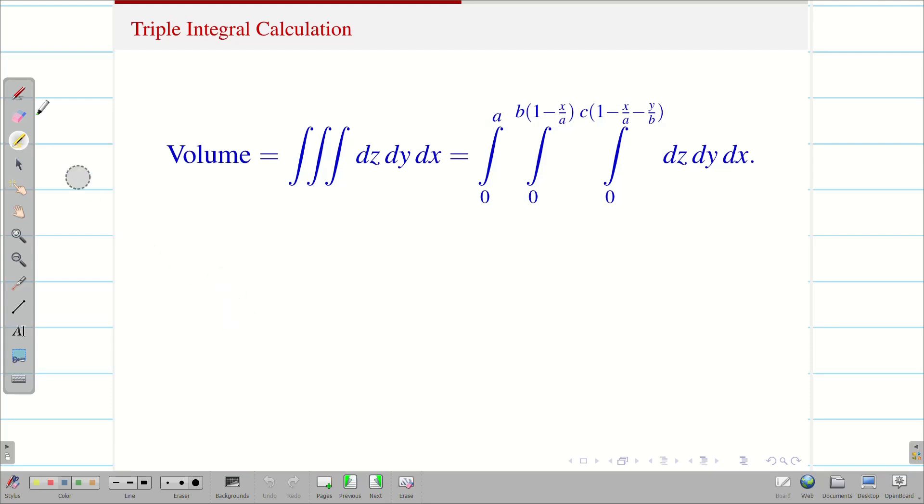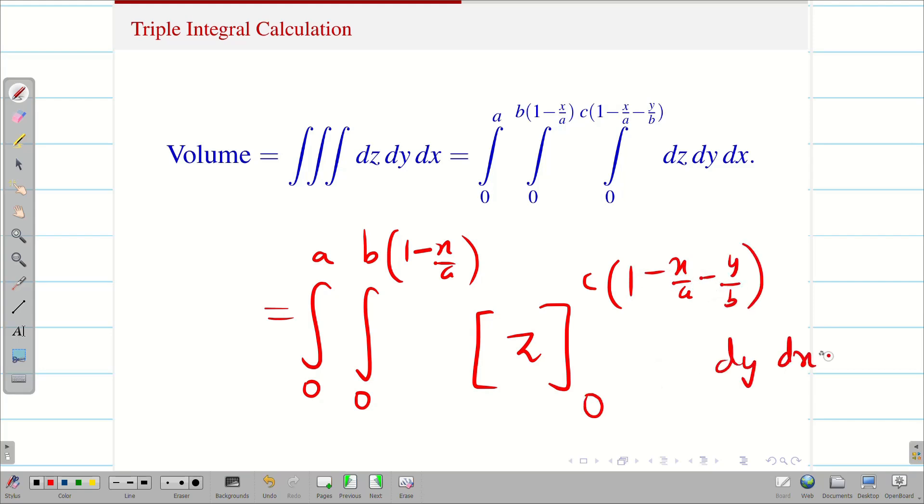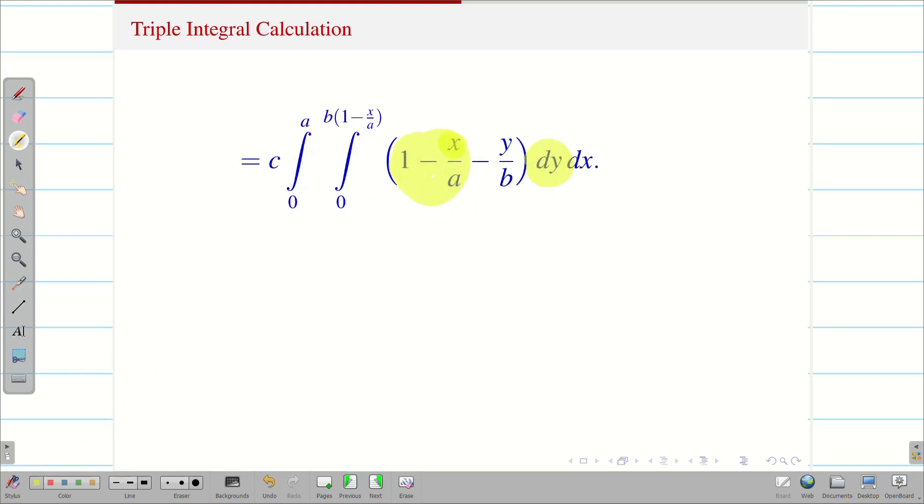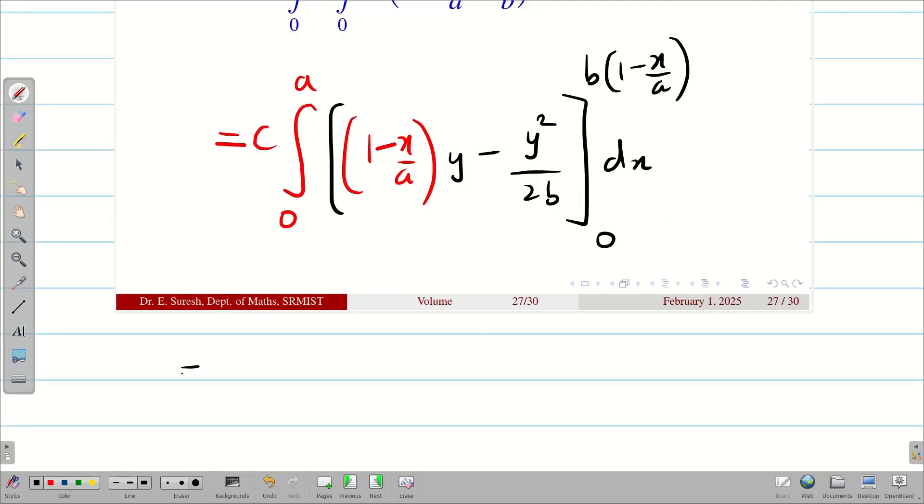Integrating this we will be getting the final solution. Integral 0 to a, integral 0 to b(1 minus x by a), z from 0 to c(1 minus x by a minus y by b), dy dx. Substituting the values we get this. Now, I can take this c outside since it is a constant. While we integrate with respect to y, 1 minus x by a is constant. Therefore, c times integral 0 to a, (1 minus x by a) times y minus y square by 2b - this is the integration with respect to y - dx. My lower limit is 0, upper limit is b times (1 minus x by a). Now, we have to substitute the upper and lower limits. We should be very cautious. We should not do any errors.